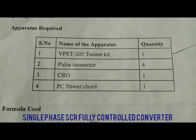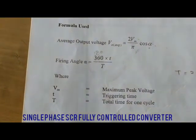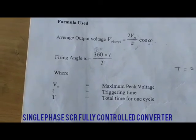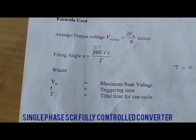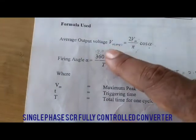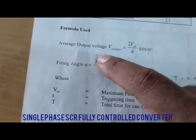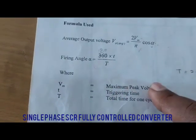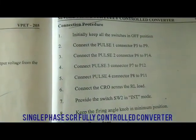The apparatus required is a trainer kit, pulse connector, CRO, and PC power card. The formula used here is: average output voltage V0 equals 2Vm by Pi times cos alpha. The firing angle alpha equals 180 degrees multiplied by small t divided by big T, where Vm equals maximum peak voltage, small t equals screen time, and big T equals total time for one cycle.